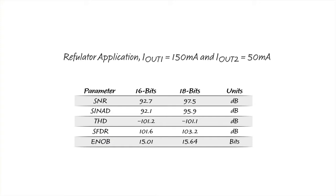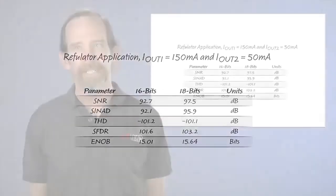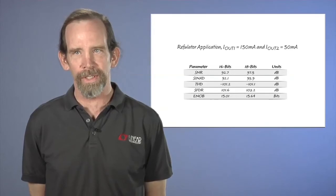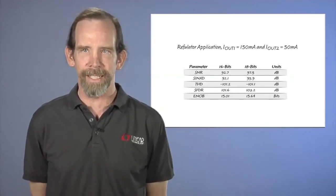And, as you can see in the table, the LT6658 performed well, delivering a stable, fast-settling reference voltage to the high-performance ADCs.